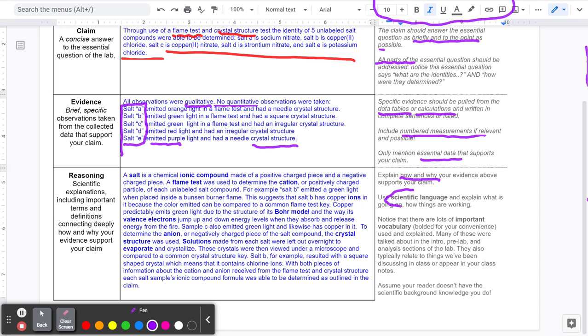A big key here is to use scientific language. Notice here there's lots of important vocabulary terms that I bolded for you in this example reasoning statement. These bolded vocabulary terms came from the lab. They came from the experience, namely by reading the intro, by following along with the pre-lab, by doing the analysis section, and also just general things that we discussed in class or through our notes.